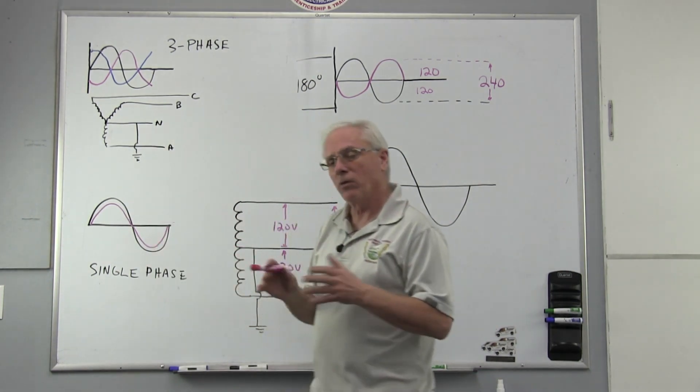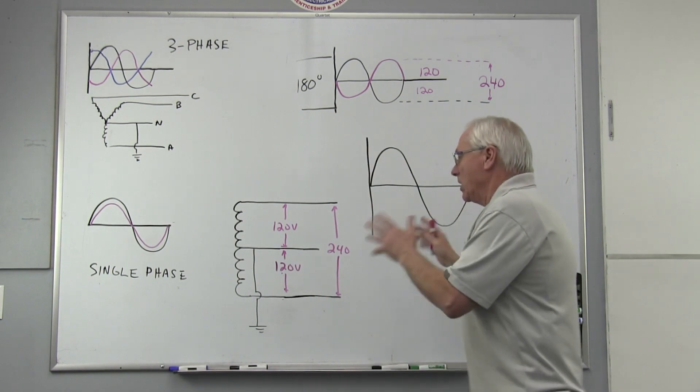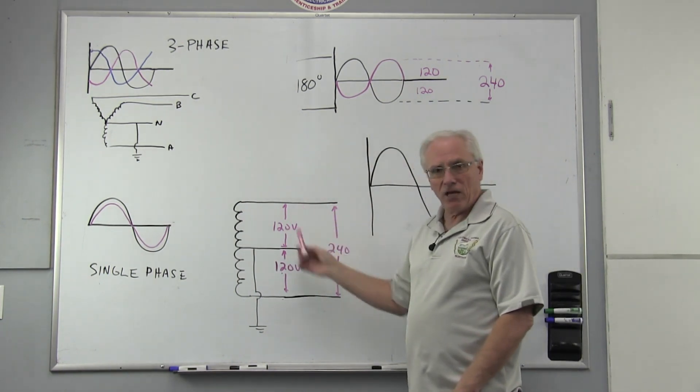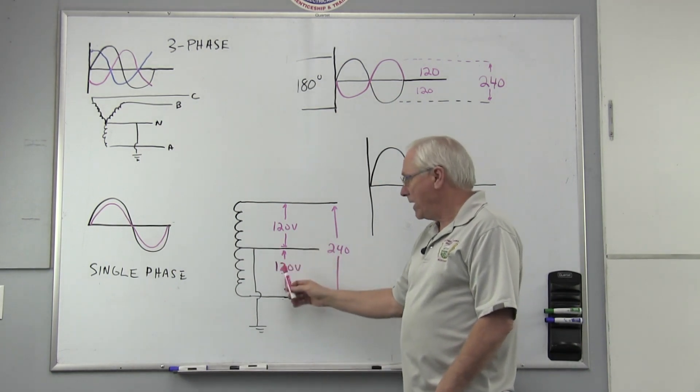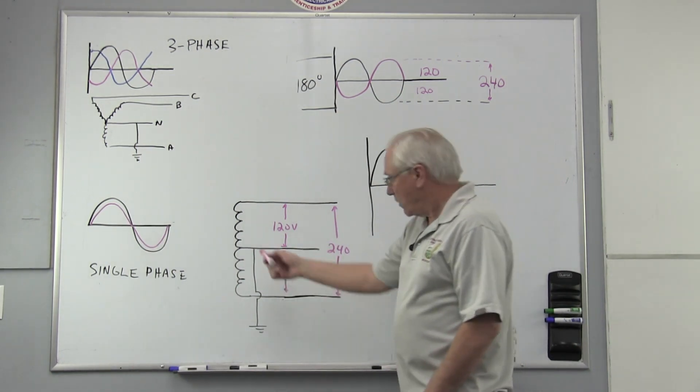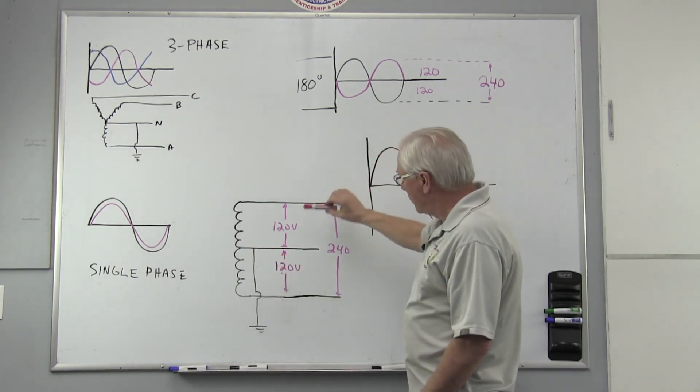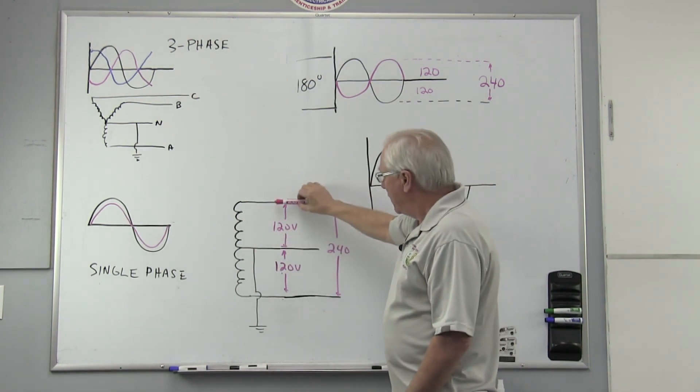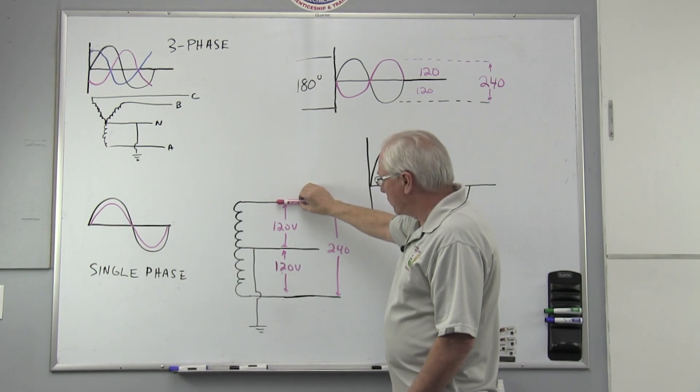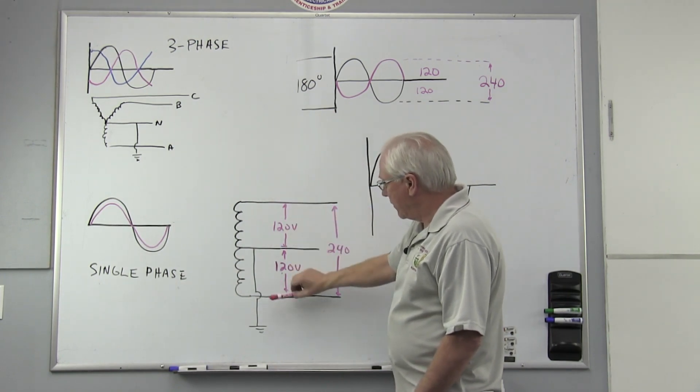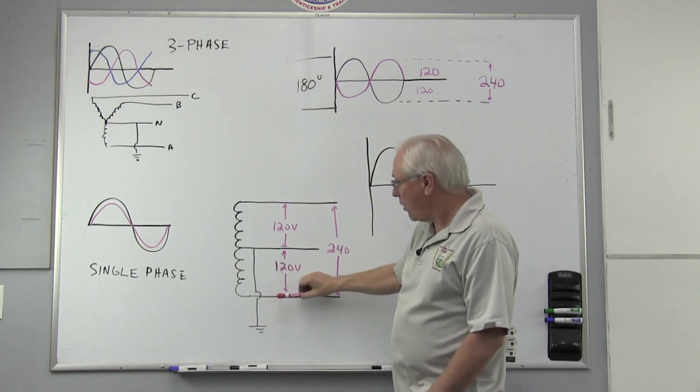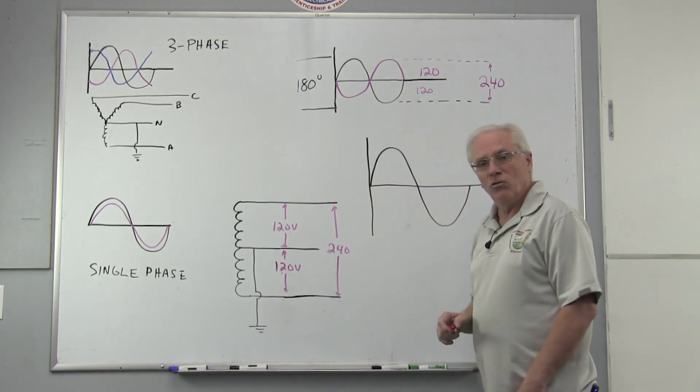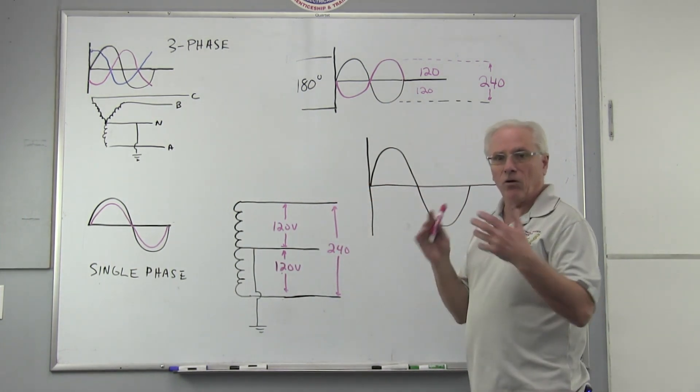A 120 volt, 240 volt system is usually drawn like this, and this is correct. It's one transformer and one set of windings, and they center tap it. Between the neutral conductor and one side of the transformer you get 120 volts, and the neutral and the other side you get 120 volts. Also between the two end windings you get 240 volts. It's a single phase impulse.